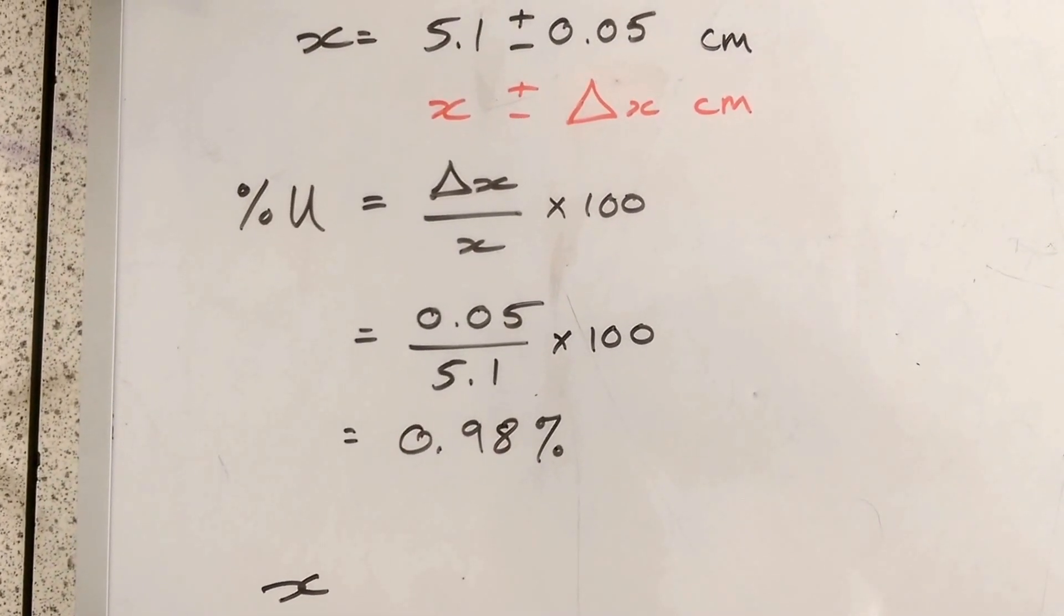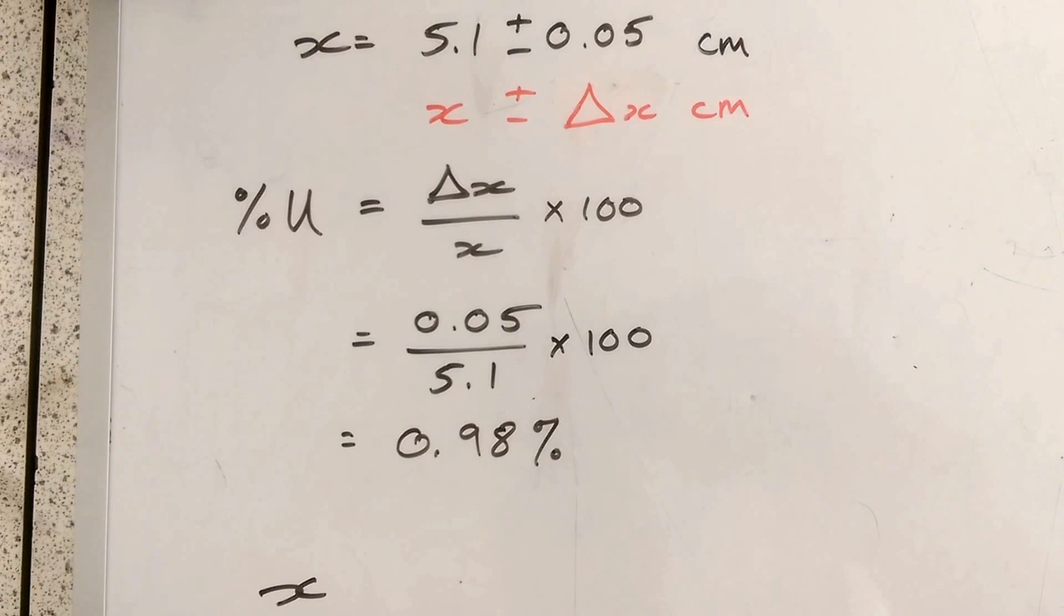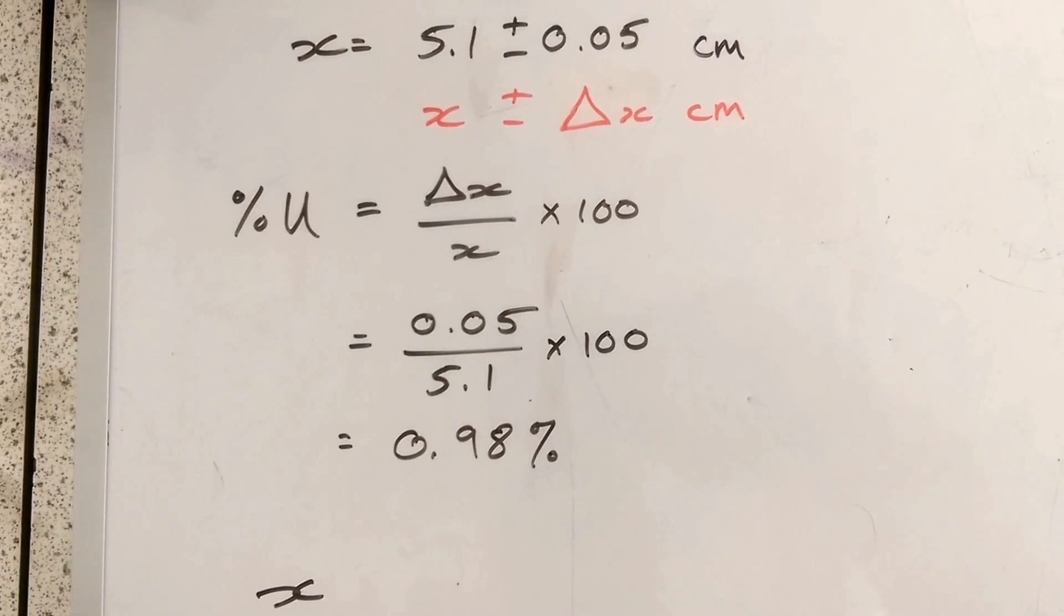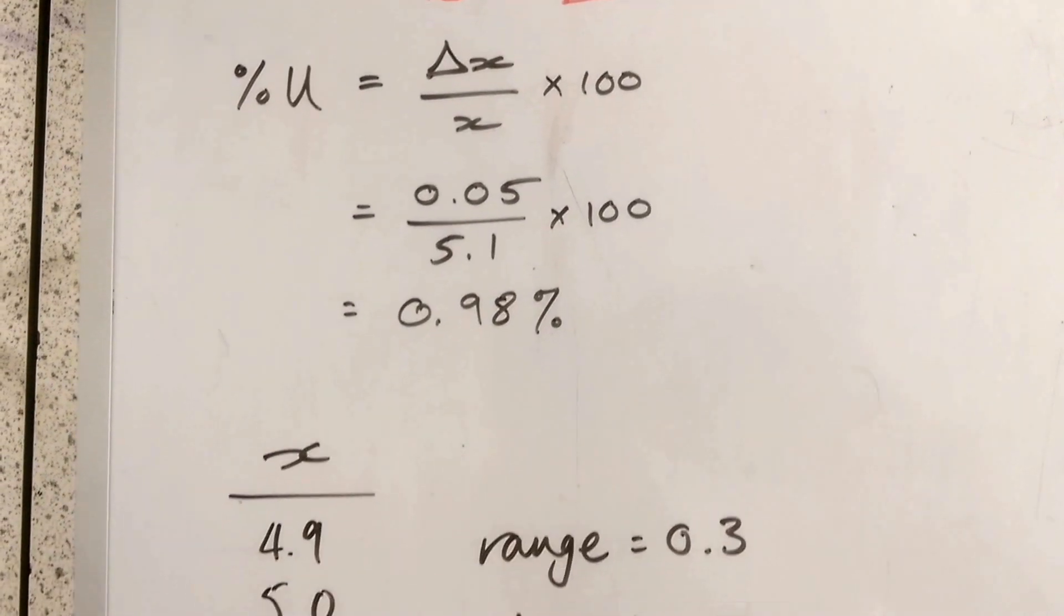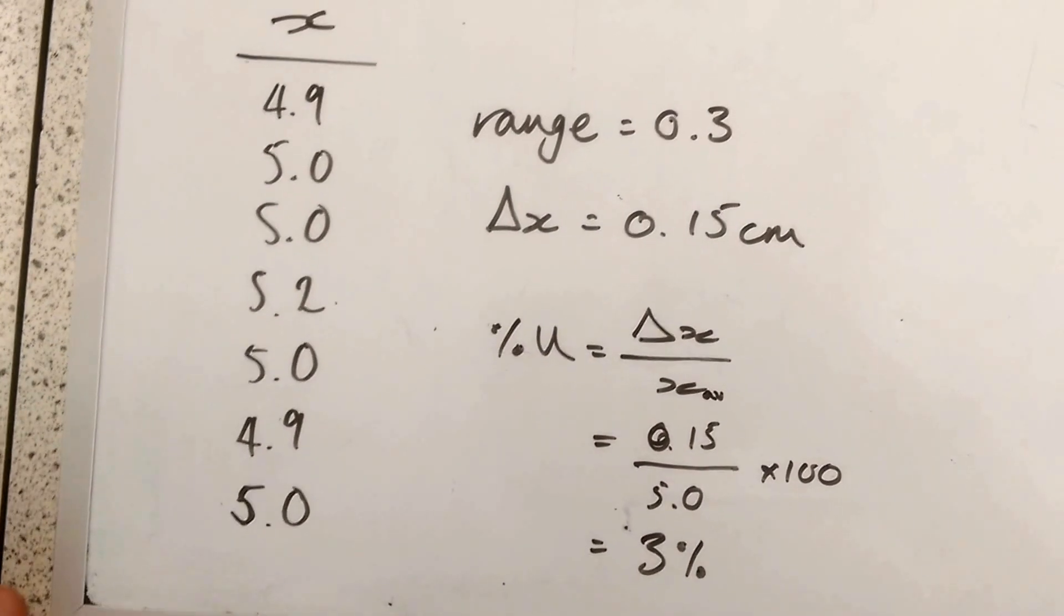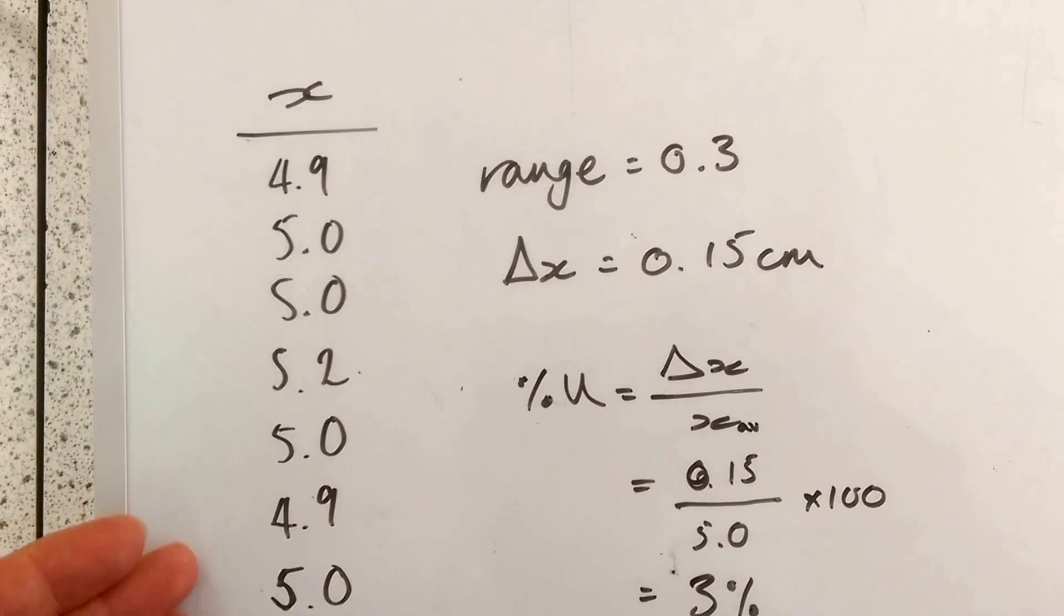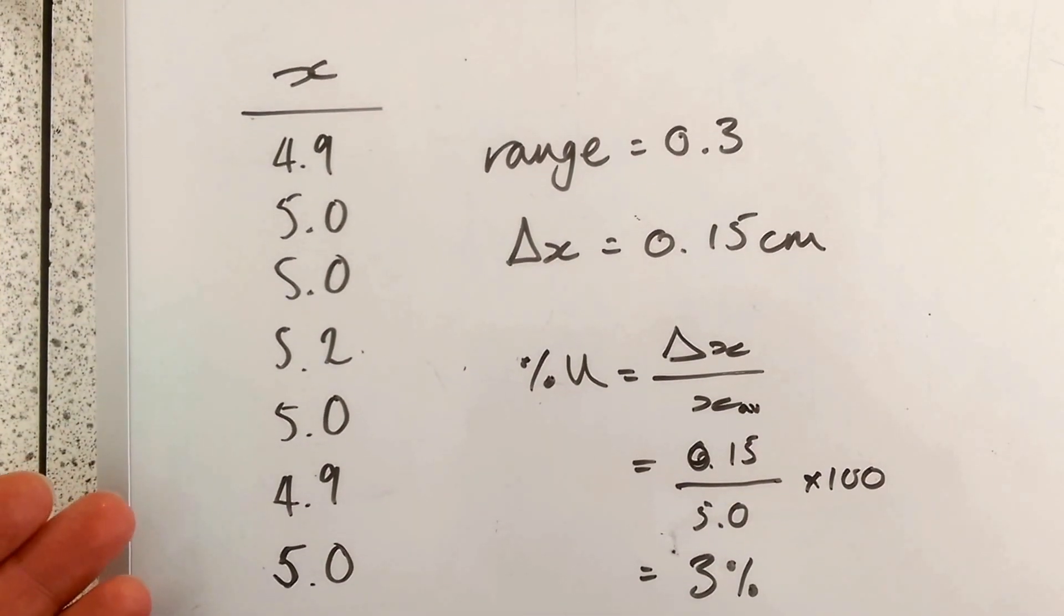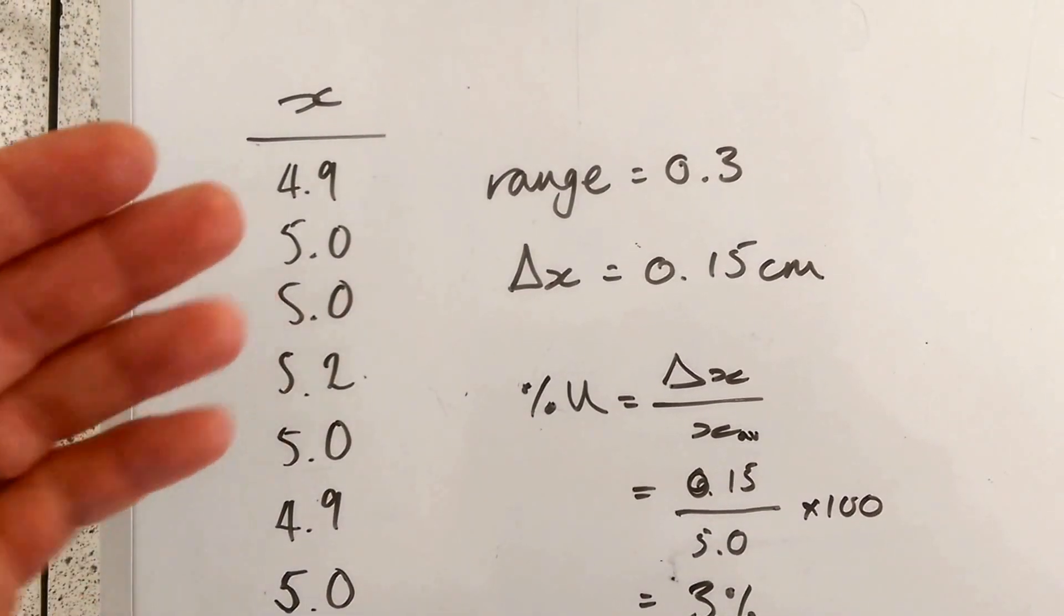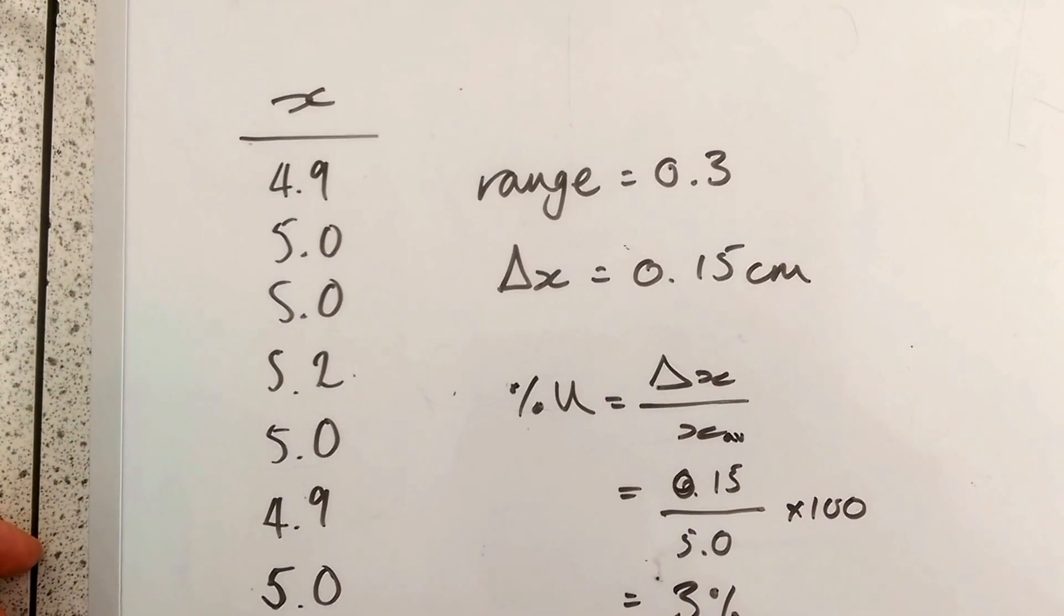There's another way to do this though. Let's imagine that's a rectangular object and I've measured it in many different places, so I've got an average. I've taken a range of different readings and calculated an average which is 5.0. The range of these readings is 0.3.